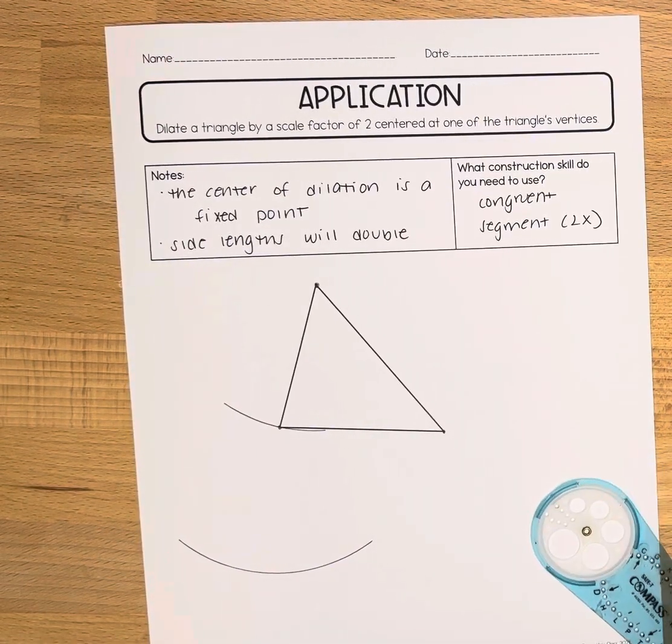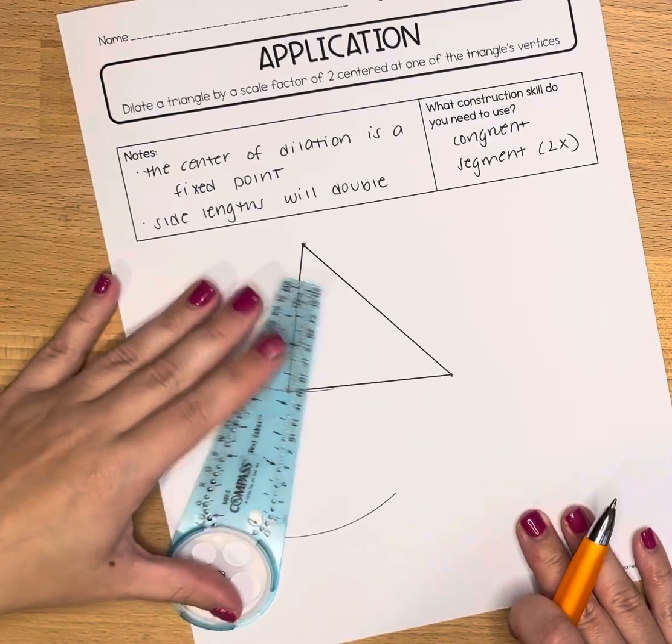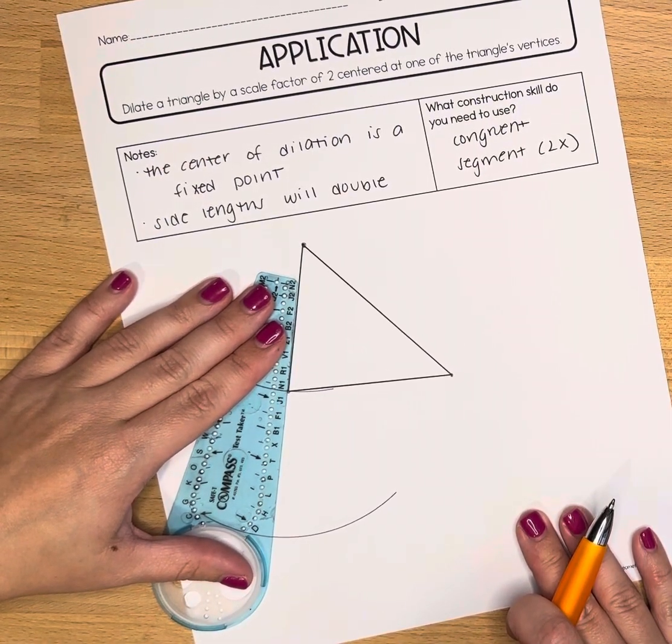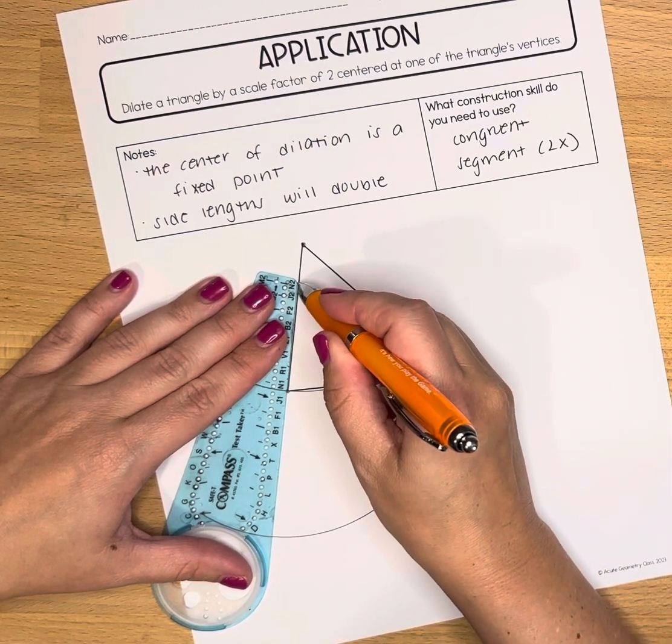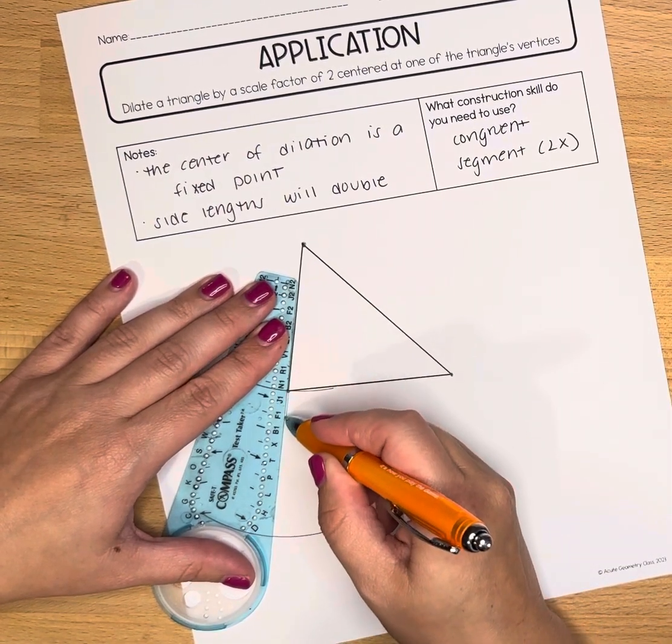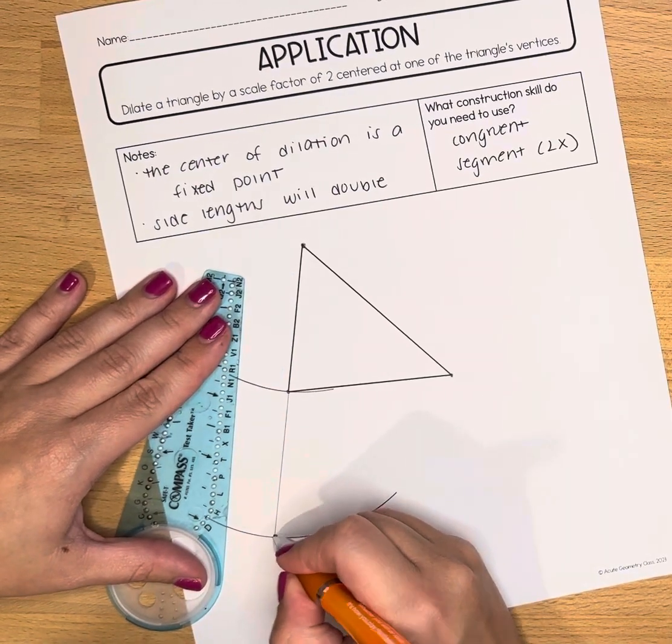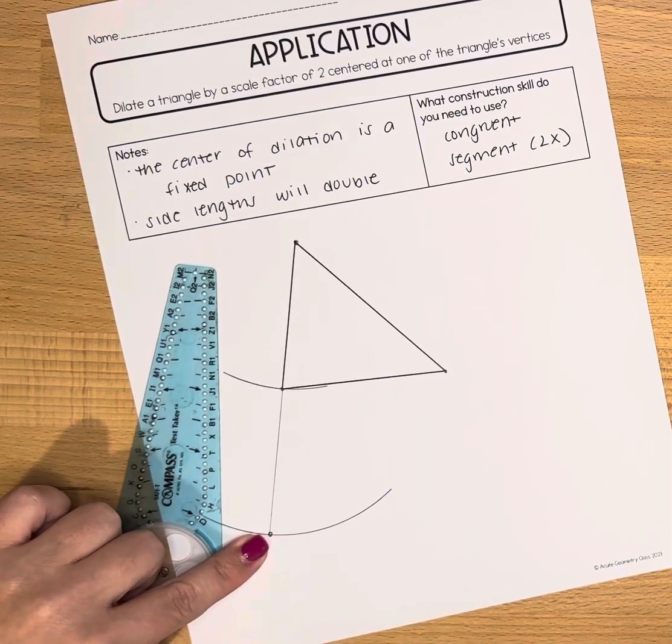Then what you're going to do is you're going to take a straight edge and you're going to extend that original side. So a dilation preserves parallelism and slope so we are just going to extend that side and here is our first vertex after the dilation.